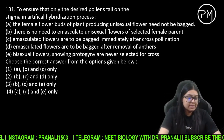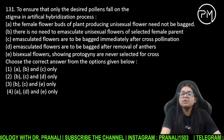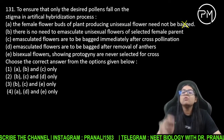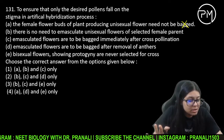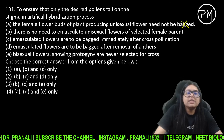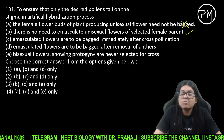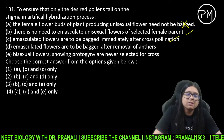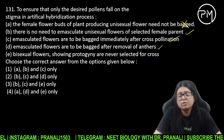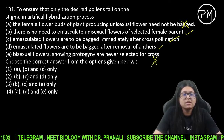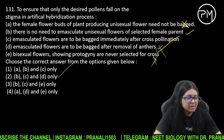Artificial hybridization ke baare mein kya correct hai? Female flower of a plant unisexual needs not to be bagged — dekho female ko bag toh karna hi padega taaki unwanted pollens na aayein — toh A wala galat hai. There is no need to emasculate unisexual flower — haan, unisexual hai toh phir male ko kyun remove karein. Emasculated ko bag karna chahiye after cross pollination — sahi hai. Bisexual flowers showing protogyny are never selected for cross — aisa kuch nahi hai, they can be selected. Toh yahan pe sirf B, C, D correct ho jaayenge.